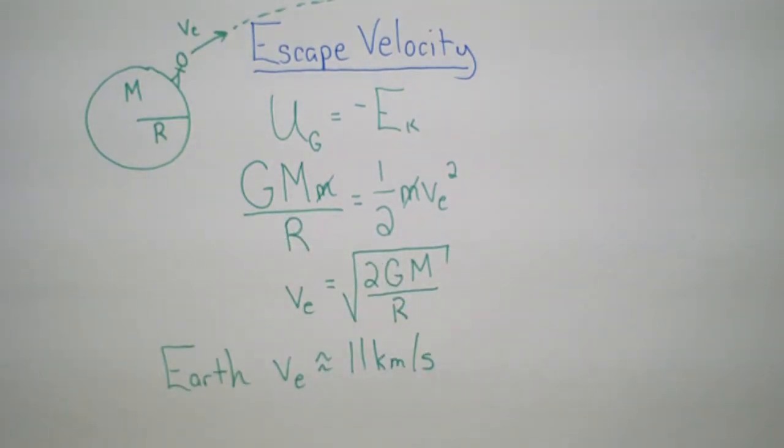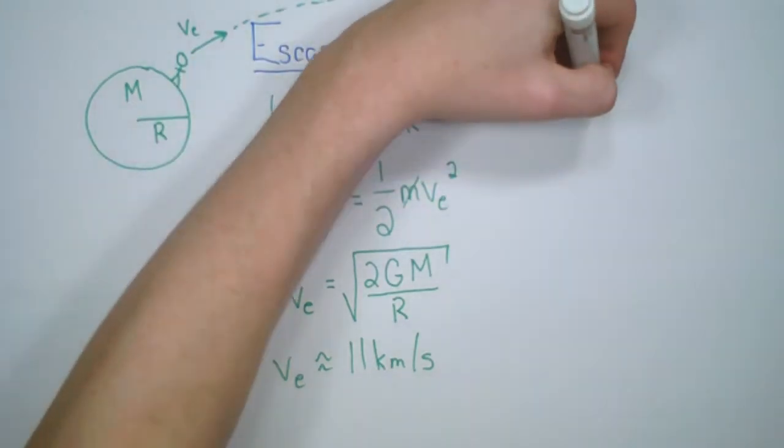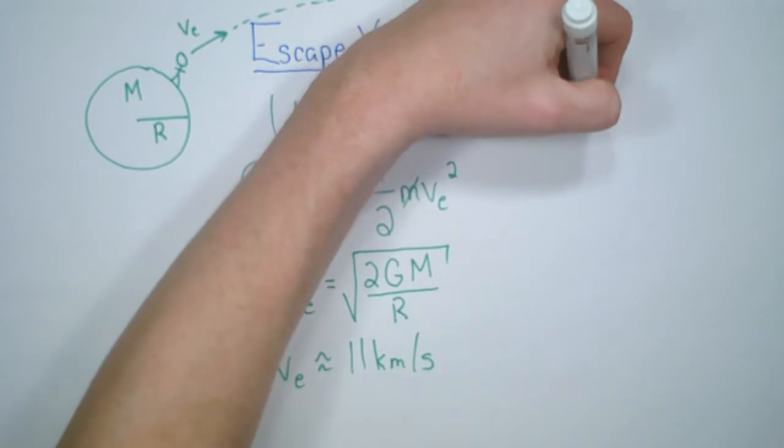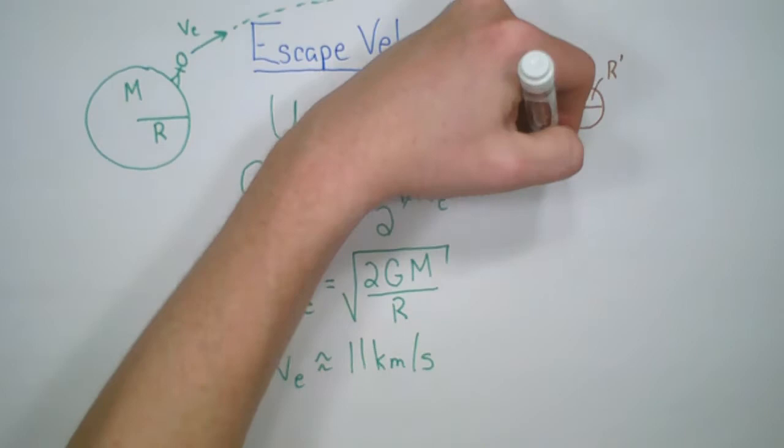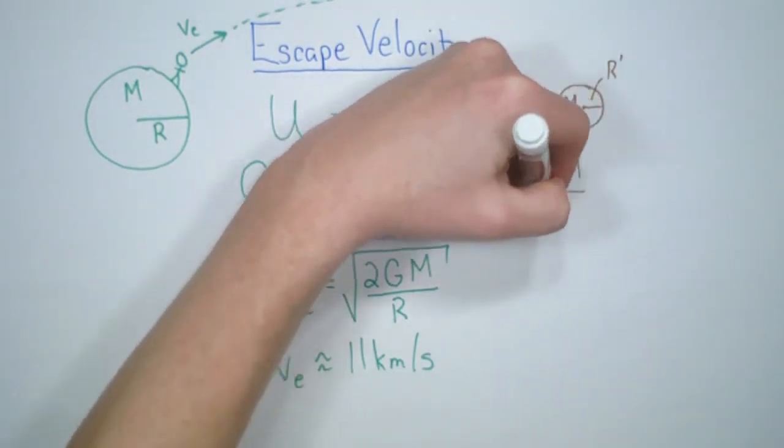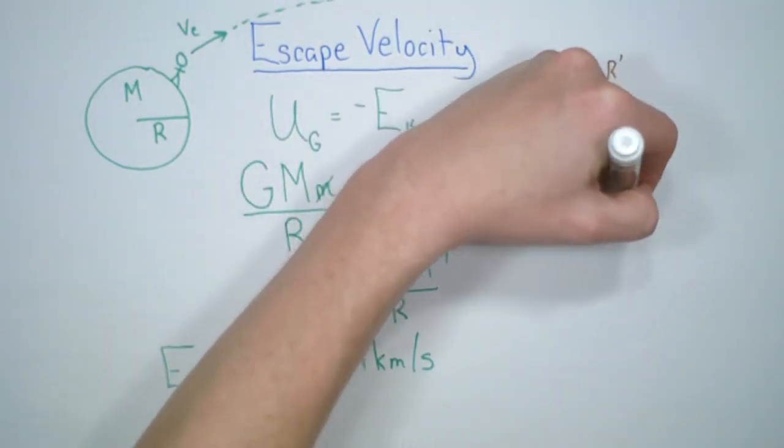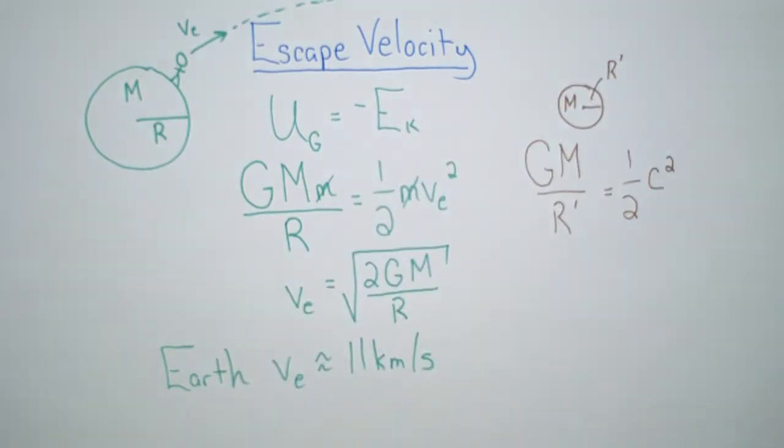What this leads to is we can now take the object, same mass, but we're going to shrink the radius. We're going to have a new radius, r prime. And we know that the fastest thing in the universe is the speed of light, or the universal speed limit is the speed of light. And so if we set our escape velocity equal to the speed of light, we see this equation.